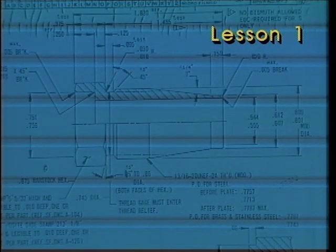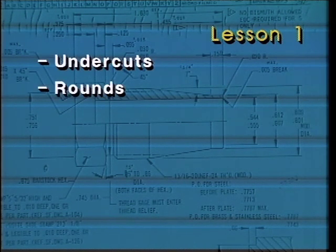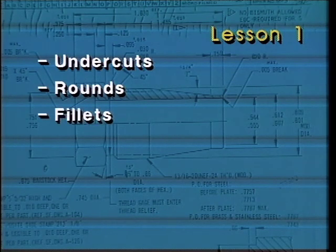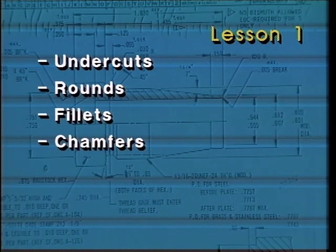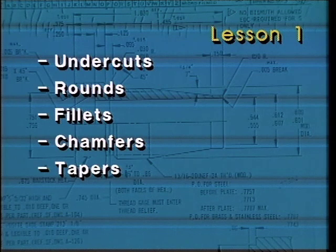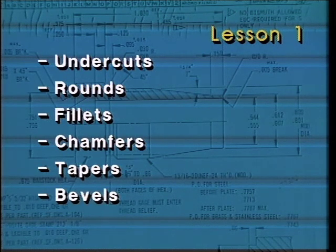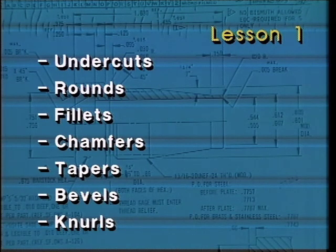Let's pause now and review what we've covered in lesson one. In this lesson, you've learned to recognize part features, including undercuts, rounds, fillets, chamfers, tapers, bevels, and knurls. You've seen how to identify each of these on parts and on blueprints. You've also seen the difference between rounds and chamfers, and the difference between chamfers, tapers, and bevels.